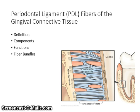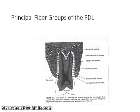The sensory function is carried out by nerve fibers that transmit tactile pressure and pain. The nutritive function is carried out by blood vessels that provide nutrients to the cementum and bone. The formative function is carried out by cementoblasts, which are cementum builders, and osteoblasts, which are bone builders. The resorptive function is carried out by osteoclasts that can produce rapid bone resorption and sometimes resorption of cementum. The PDL of single-rooted teeth contains four primary fiber bundles; multi-rooted teeth have five.